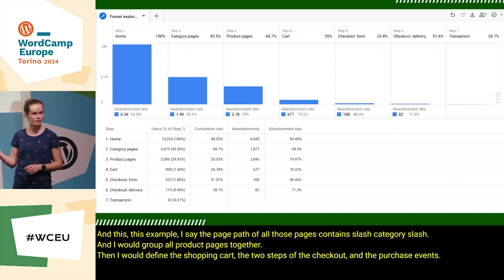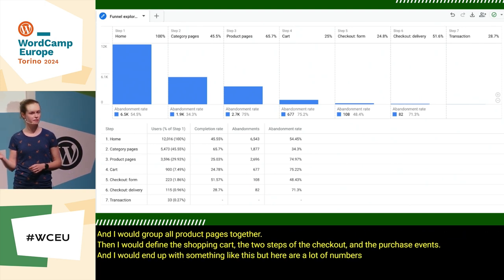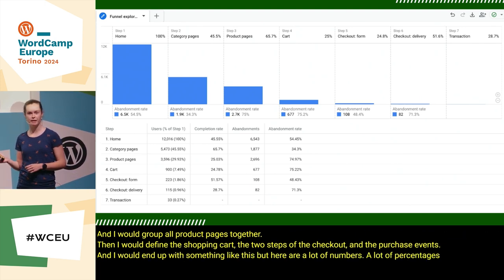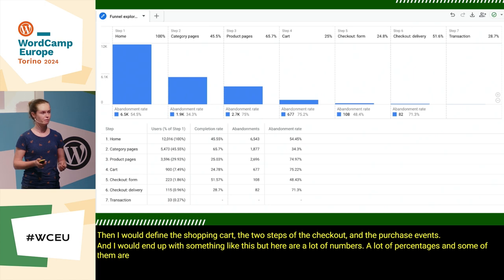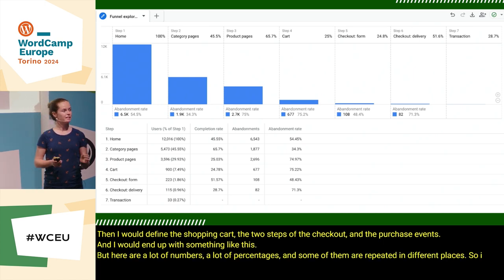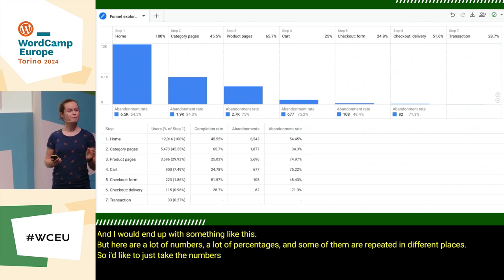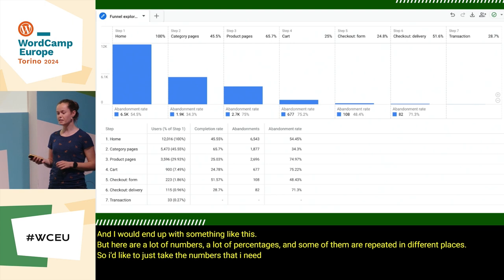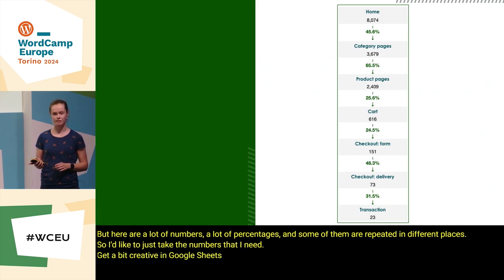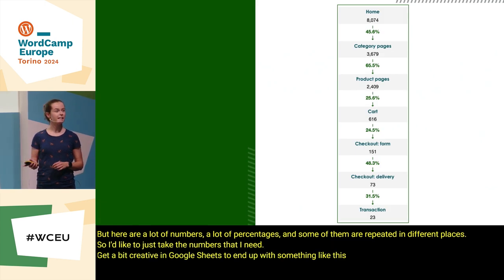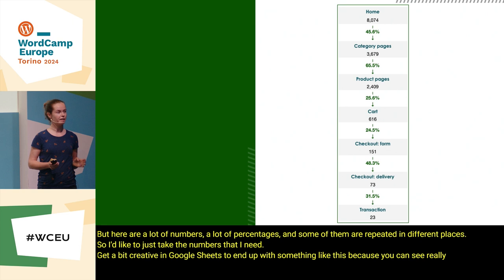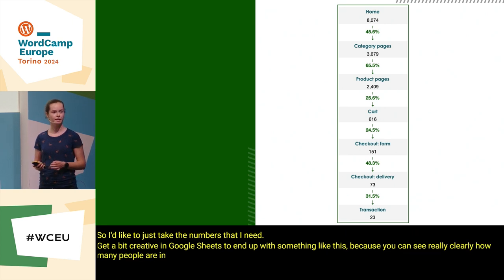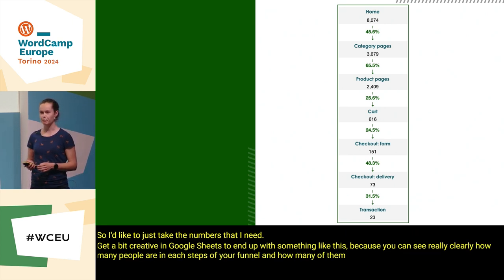And I would end up with something like this. But there are a lot of numbers and percentages, and some of them are repeated in different places. So I'd like to take just the numbers I need, get a bit creative in Google Sheets, and end up with something like this — because you can see really clearly how many people are in each step of your funnel and how many of them continue to the next step.